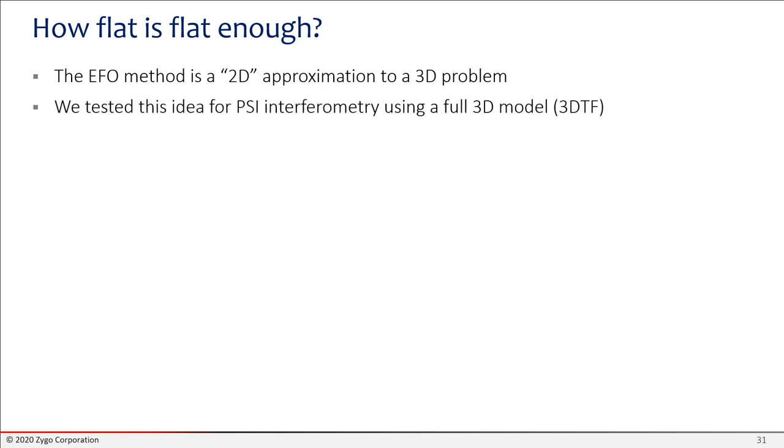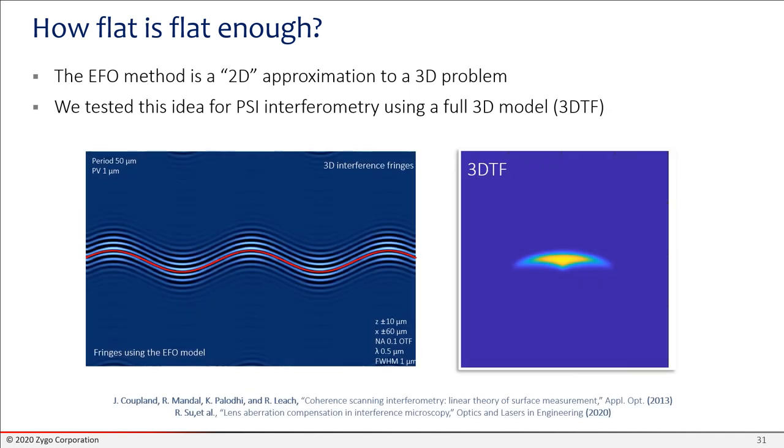So how flat does the part have to be in order for the EFO model to work for a fixed focus system like a phase shifting interferometer? Well, the model is a 2D approximation to a 3D problem. So to get a good idea about what the limits are, we can use a full 3D model, a 3D transfer function model that treats the object actually as a real surface topography rather than this flat aperture function. To do that, we rely on a 3DTF model. It's also called the FOIL model that was created by Jeremy Coupland and colleagues and has been further developed by Professor Richard Leach and Dr. Rong Su at Nottingham. And this is a very good way of evaluating more realistically what is going on in the interferometer, particularly if you're trying to find out what the limits are of a 2D approximation.